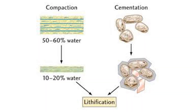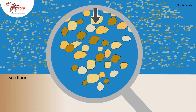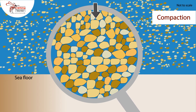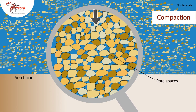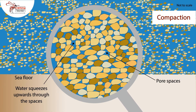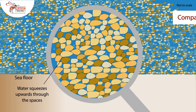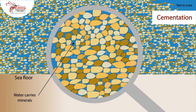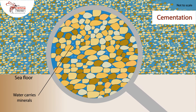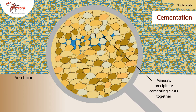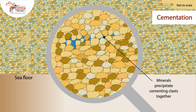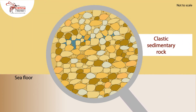Now onto the final step: compaction and cementation. Over time, more and more layers of sediment build up. The weight of the upper layers compresses the lower ones, squeezing out the water and air — this is called compaction. And then minerals like quartz or calcite act as a glue and cement the sediments together, forming a solid rock.